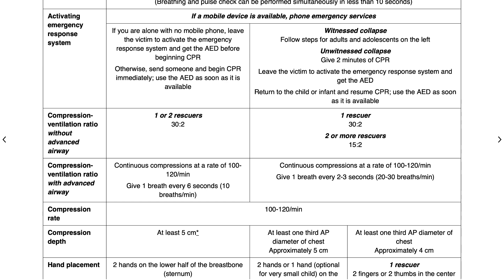If you're performing compressions with an advanced airway, you'll continuously do compressions at a rate of 100 to 120 pushes per minute, and give one breath every 6 seconds for adults. In children and infants, you'll also continuously perform compressions at a rate of 100 to 120 pushes, but give one breath every 2 to 3 seconds.